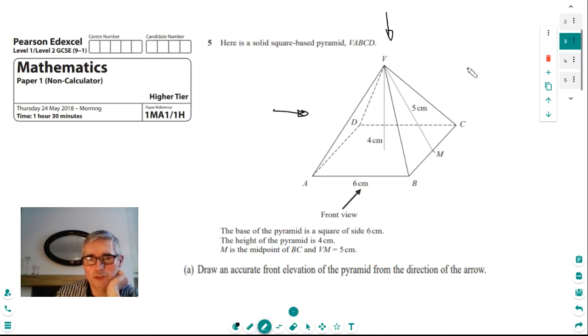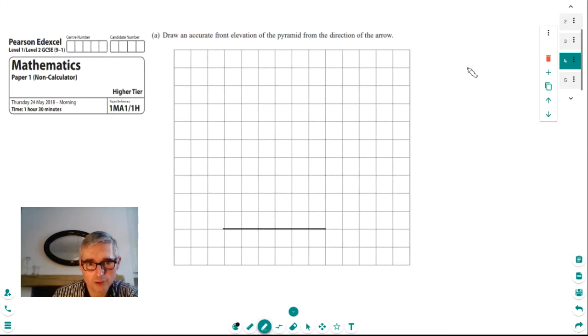Now the important thing we can see from the centre is that the height of the pyramid is four centimetres. So that's going to have to be, if we're viewing in this direction, we will actually see a triangle and the height of that triangle would be four centimetres. And it's also coming from this centre point here. So if we go up four centimetres, that would take us to there.